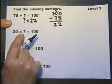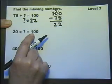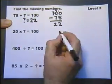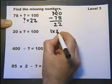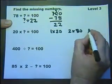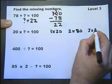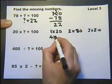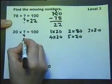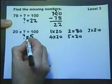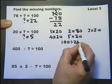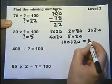20 multiplied by something is 100. There are several ways of doing it. You could think about your 20 times table: one 20 is 20, two 20s is 40, three 20s is 60, four 20s is 80, five 20s would be 100 — so that must be the question mark. Another way to think about it is 100 divided by 20: how many 20s are there in 100?